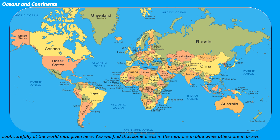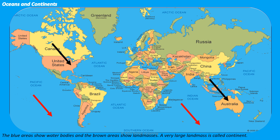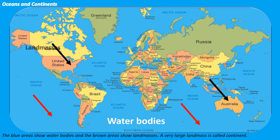Look carefully at the world map given here. You will find that some areas in the map are in blue while others are in brown. The blue areas show water bodies and the brown areas show land masses. A very large land mass is called a continent.